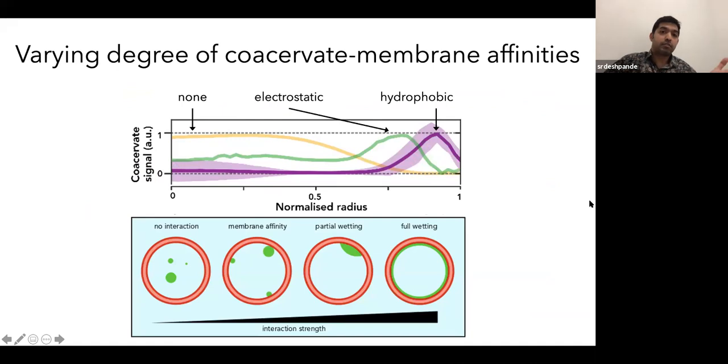So in short, we can vary the degree of condensate membrane affinities from no interaction at all to electrostatic and hydrophobic, where it is even more tightly bound to the membrane. And you can think of it as an increase in the interaction strength, where you have just the spherical condensate side of membrane and then partial wetting and then full wetting.